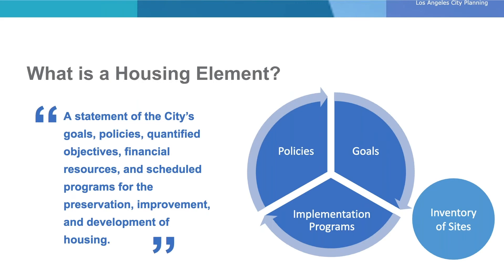The housing element identifies the city's housing conditions and needs and establishes the goals, objectives, and policies to meet those needs. Under state law, the housing element must be updated every eight years. The housing element update — also known as the Plan to House LA — will cover the years 2021 to 2029 and must include an inventory of sites zoned with sufficient capacity to accommodate future housing needs. Noncompliance can result in penalties from the state, including the loss of state funding for transportation, housing, and infrastructure — all critical needs for our city.